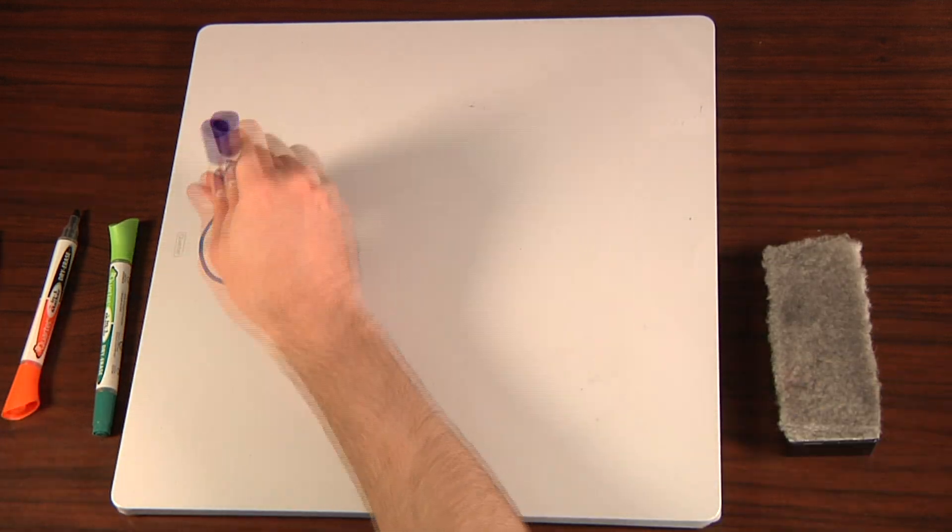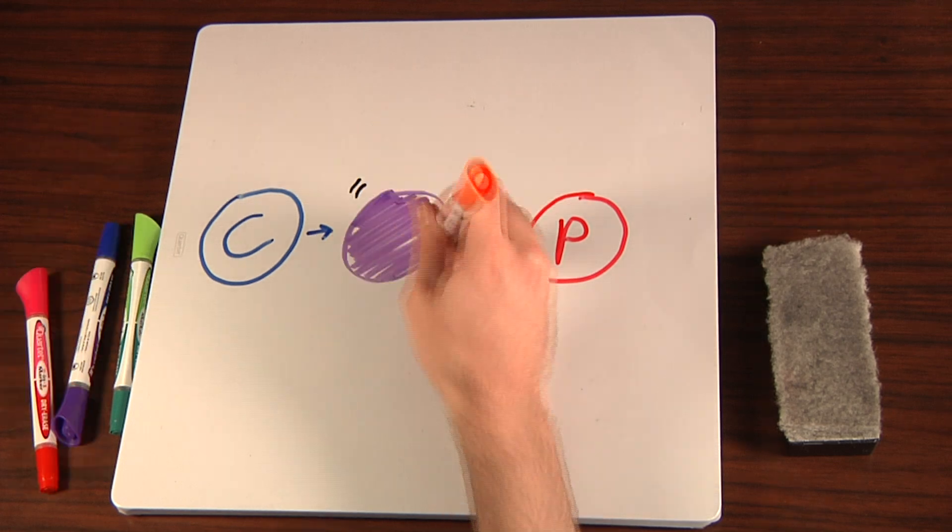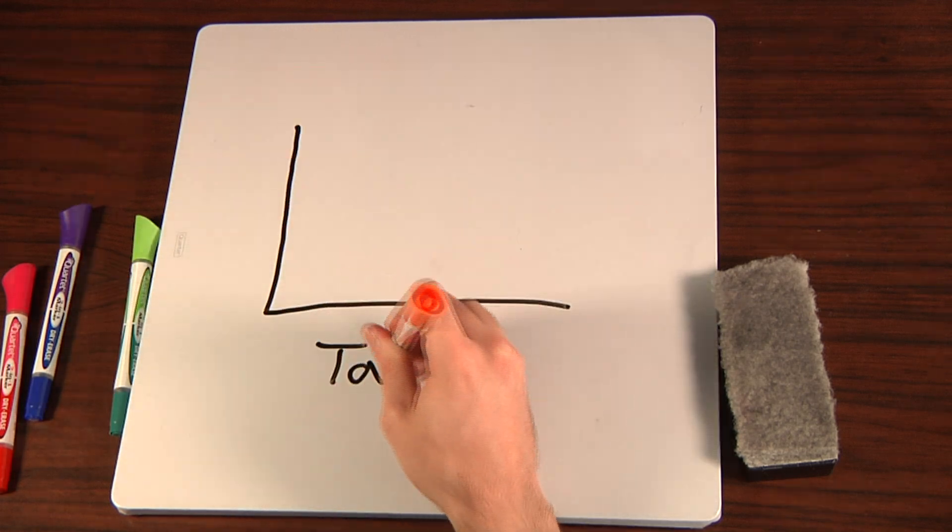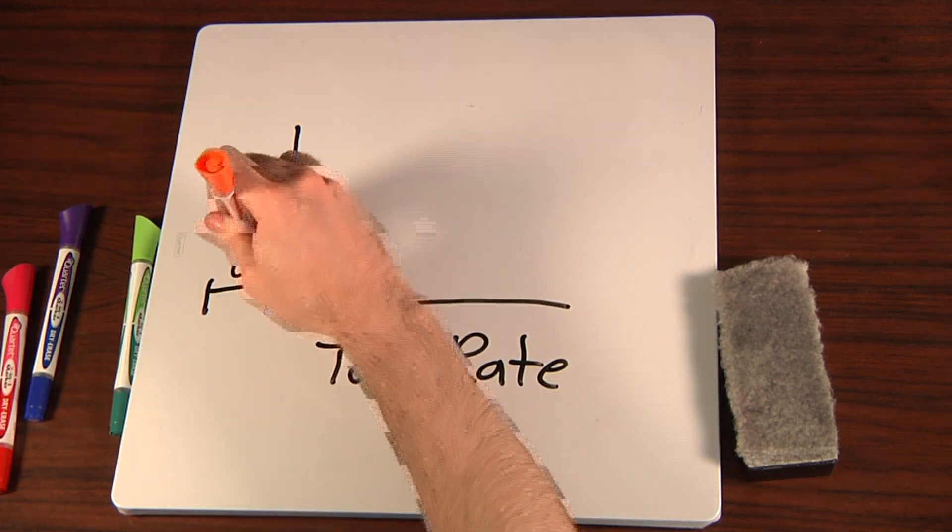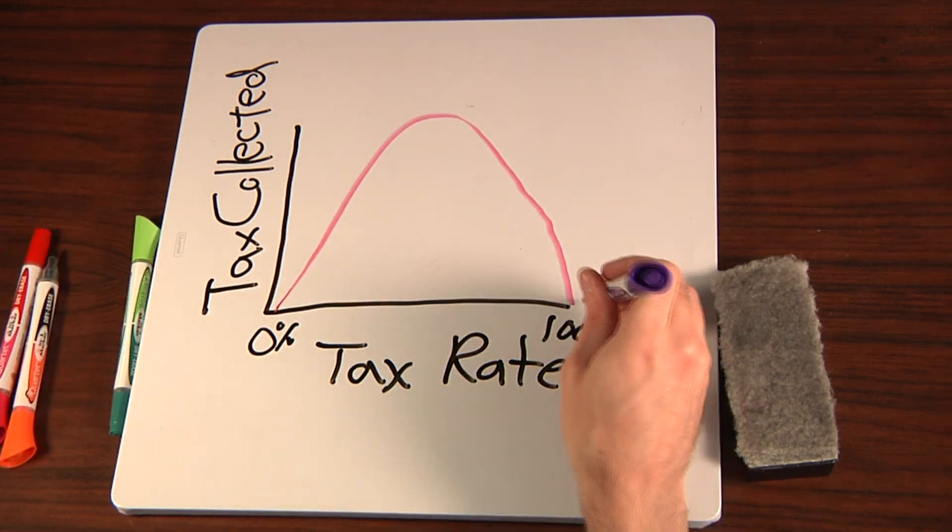Now a tax on consumption is as equally valid as a tax on production. Consumption and production are just different sides of the same coin. But there's a problem. If we have a 100% sales tax, you just double the price of whatever you're buying to get the total bill. So the merchant gets half, and the government gets half, but that's a 50% rate according to our other chart.